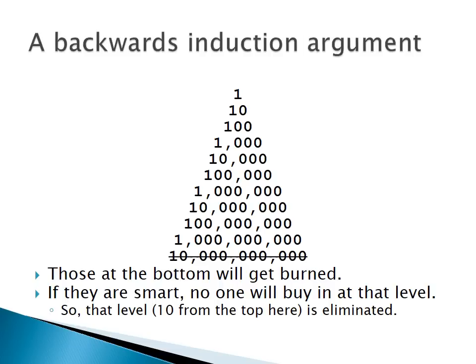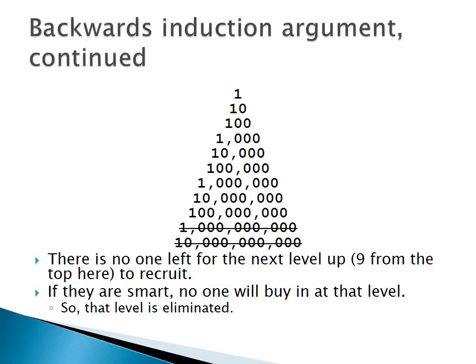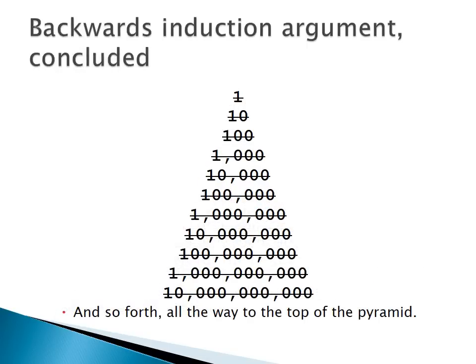Those 10 billion people at the bottom have nobody left to recruit, so if they're smart, they won't buy in. And by the same reasoning — backwards induction — the people at level 9 won't buy in either, because the 10 billion people aren't available. You can follow the logic all the way to the top of the pyramid: if everyone is smart, no one should ever buy into the pyramid.